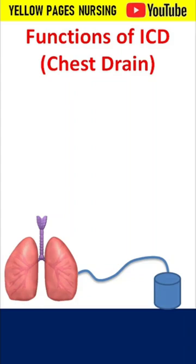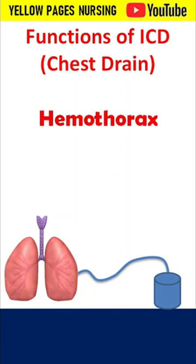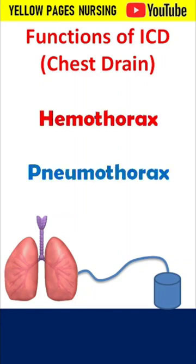Functions of intercostal drainage, also known as a chest drain. It is mainly indicated in cases of pneumothorax or hemothorax. In such cases, a chest tube is inserted to drain the air and fluid from the pleural space.